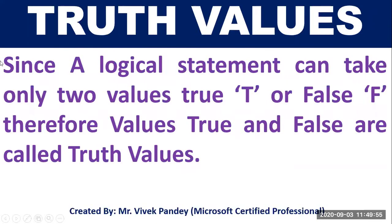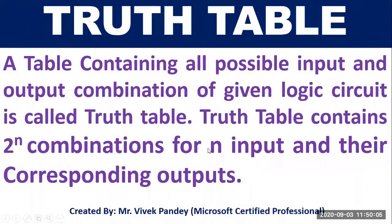What is a truth value? Since a logical statement can take only two values — true or false — therefore the values true and false are called truth values. What is a truth table? A truth table is a table containing all possible input and output combinations of a given logic circuit. A truth table contains two to the power n combinations for n inputs and their corresponding outputs.